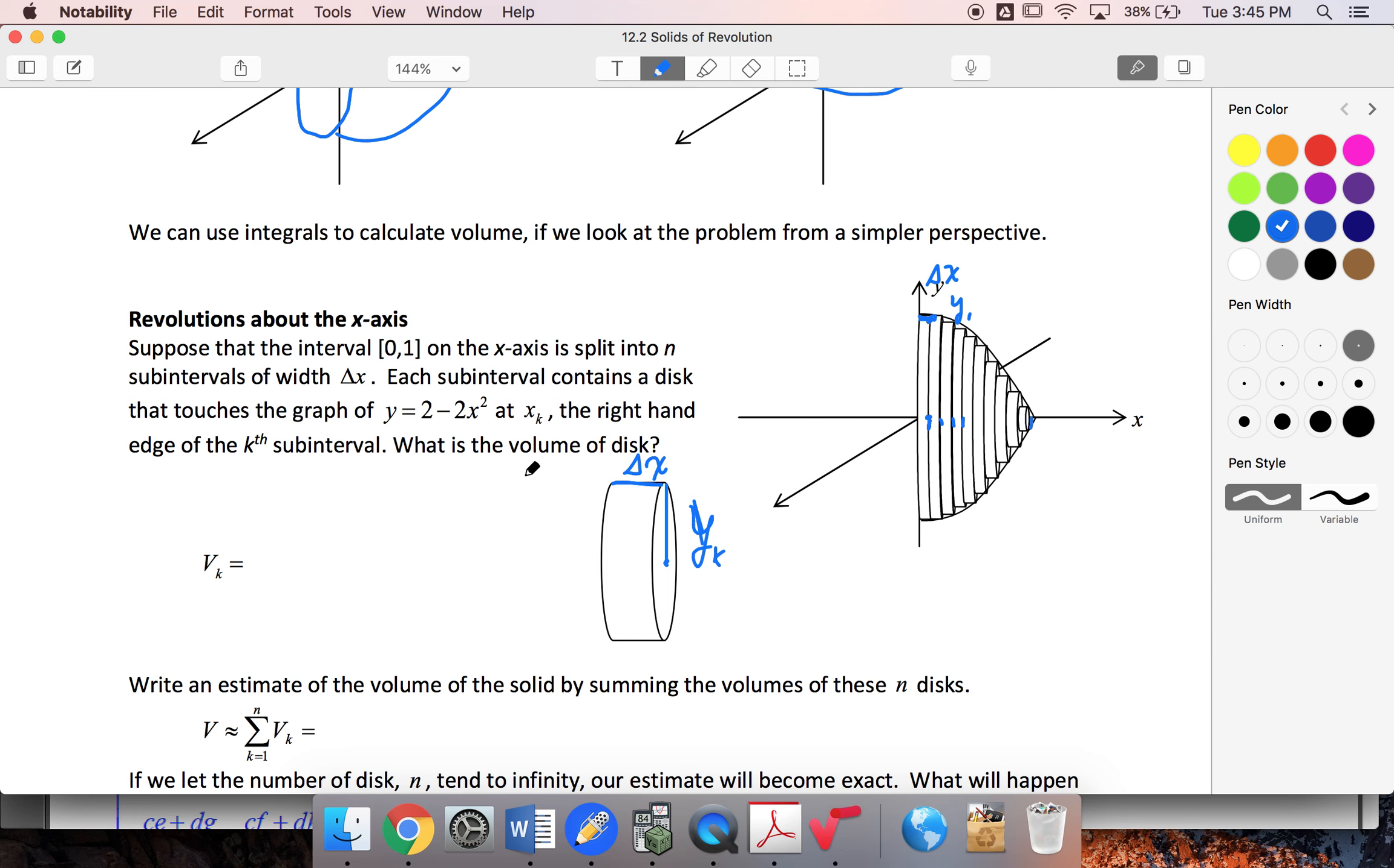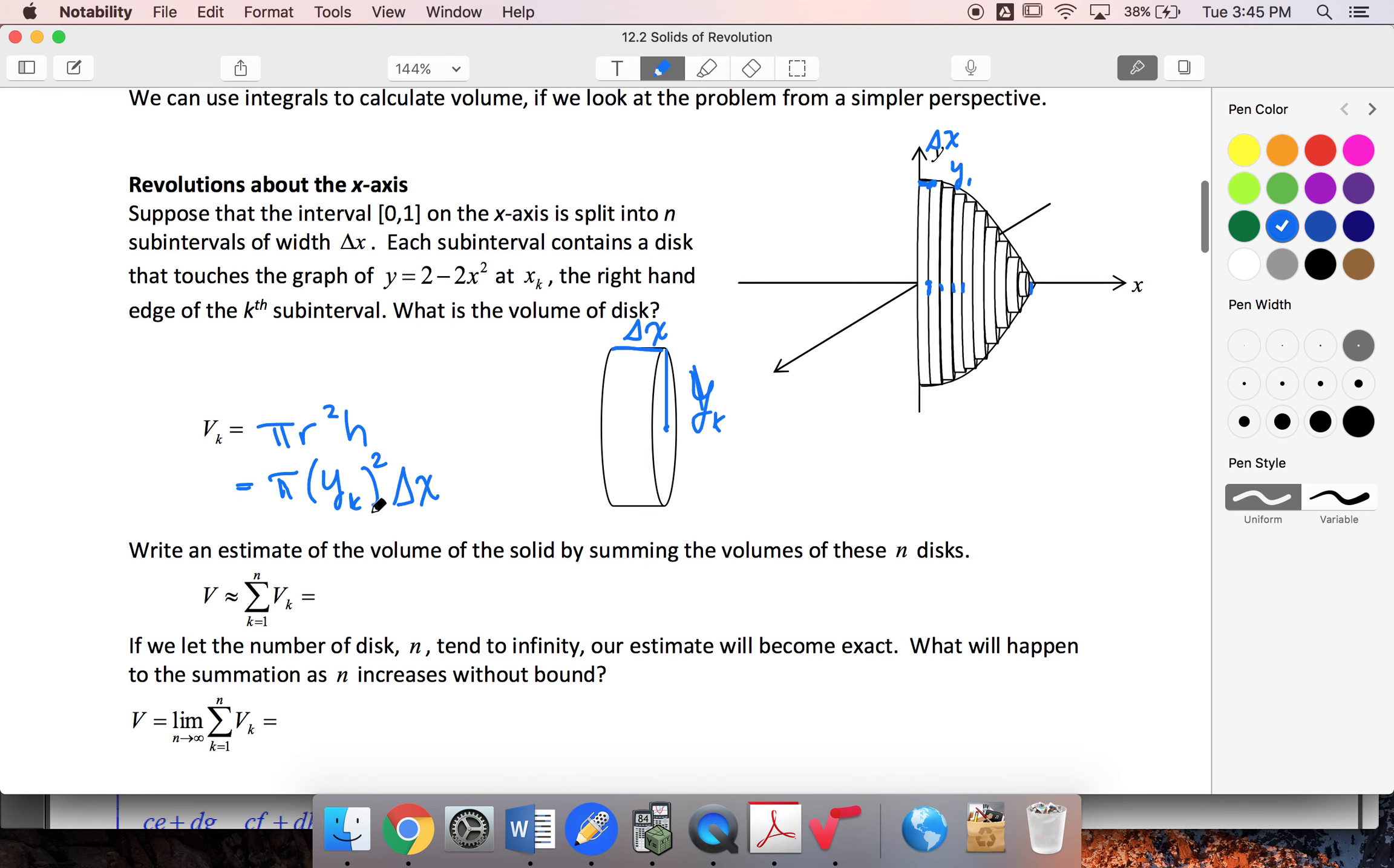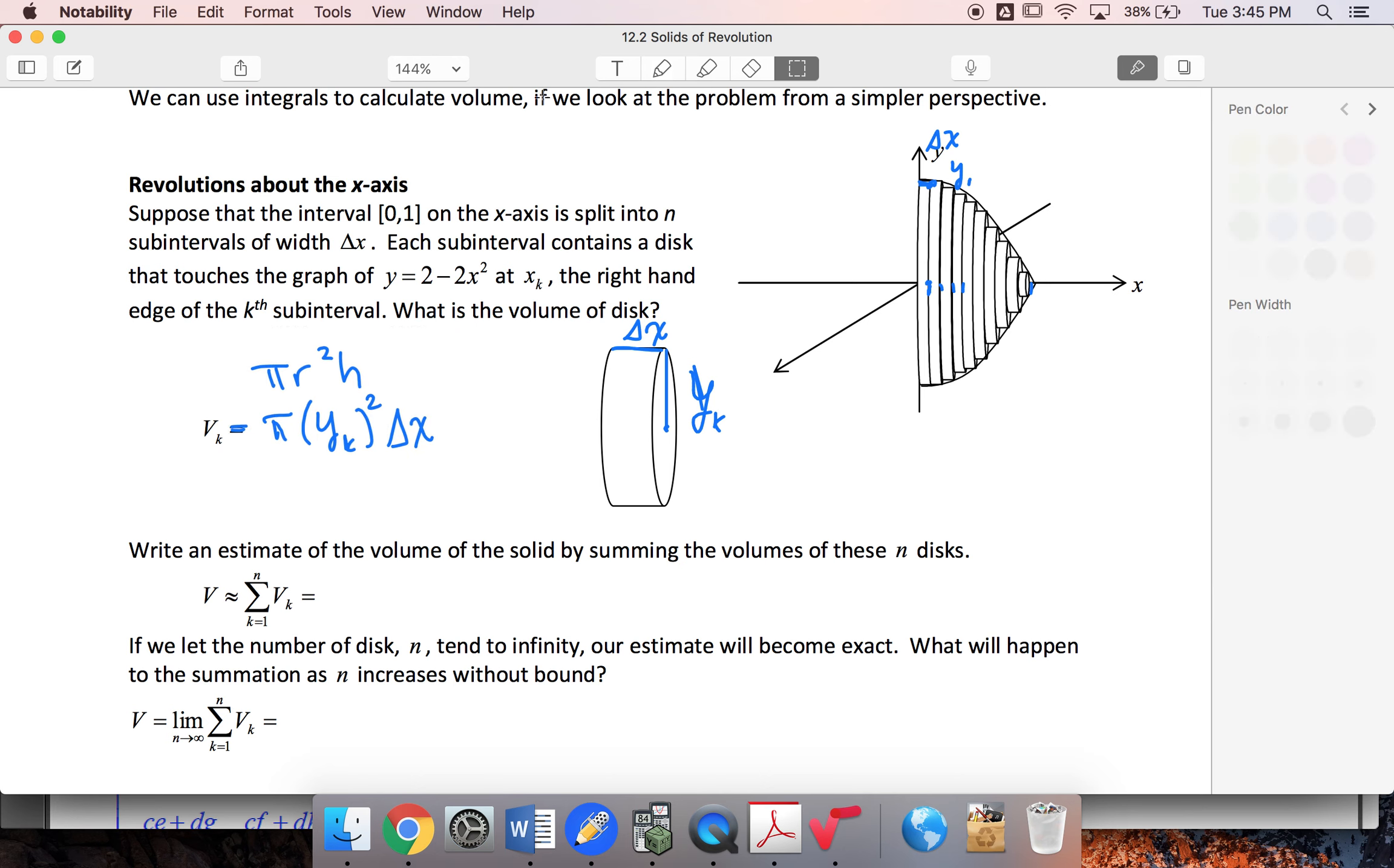So this volume, this is a cylinder. I know the volume of a cylinder is πr²h. So π, my r is going to be my y value, so y sub k squared. My height is this width here of Δx. And of course, I know that that y can be found using my equation. So my equation to find y is 2 - 2x sub k squared. Square that whole thing because it's πr² times Δx.